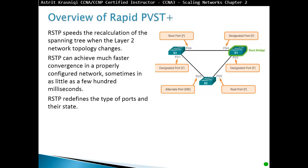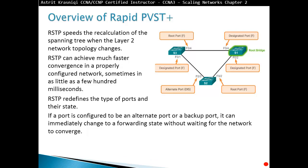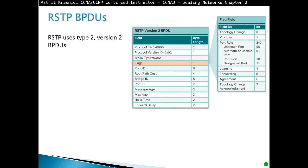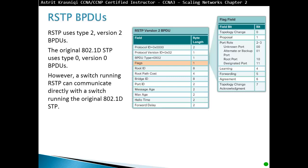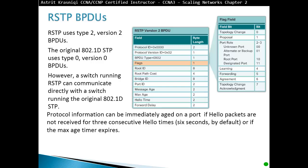Rapid Per-VLAN Spanning Tree is a Cisco implementation of RSTP on a per-VLAN basis, with an independent instance of RSTP running for each VLAN. RSTP supports a new port type called alternate port in discarding mode. RSTP does not have a blocking port state — it defines port states as discarding, learning, or forwarding. If a port is configured as an alternate or backup port, it can immediately change to forwarding state without waiting for the network to converge. RSTP uses type 2 version 2 BPDUs, while original 802.1D uses version 0 BPDUs; however, a switch running RSTP can communicate with one running 802.1D. Protocol information is aged out if hello packets are not received for three consecutive hello times — six seconds by default — or if the max age timer expires. BPDUs are used as a keep-alive mechanism.